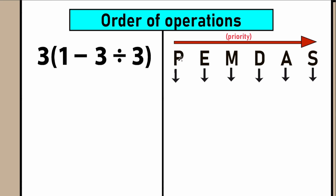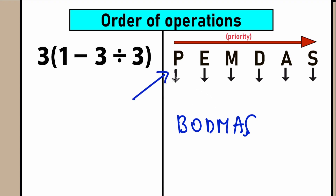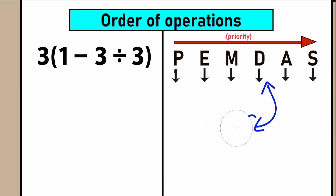Each letter in PEMDAS stands for something: P, E, M, D, A, S. A lot of students also know BODMAS, which is also an order of operations. To be honest, it's absolutely the same thing as PEMDAS — it just depends on what country you live in. PEMDAS is mainly used in Europe, the USA, and Canada; BODMAS is mainly used in the UK, India, and many other countries. The algorithm is absolutely the same for both. I'm going to use PEMDAS.